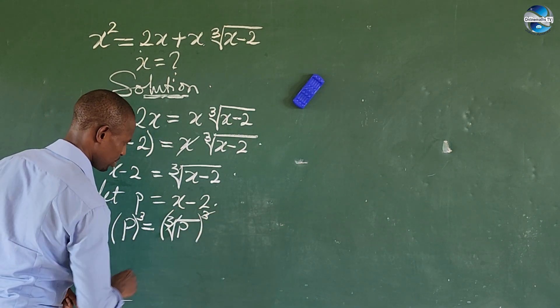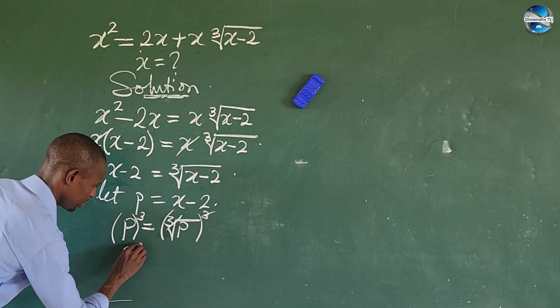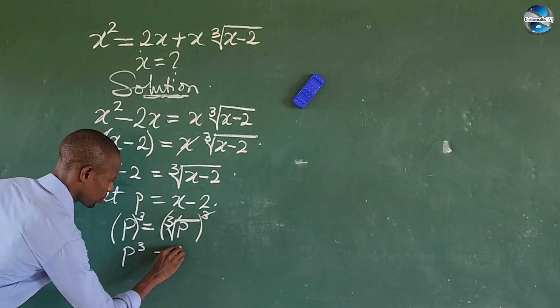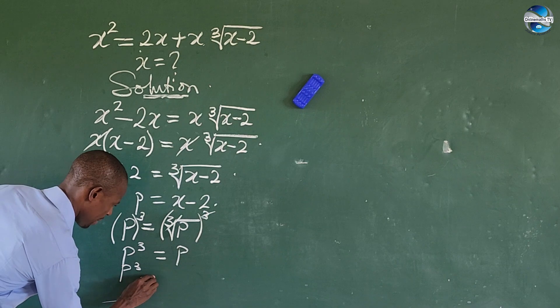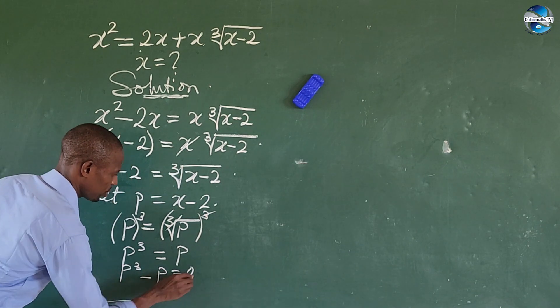This leaves us with p³ equals p. Easy. Move this to this side, so we have p³ minus p equals 0.